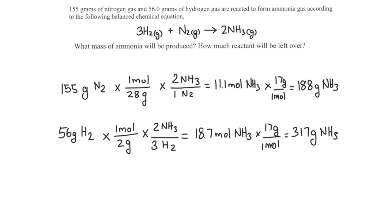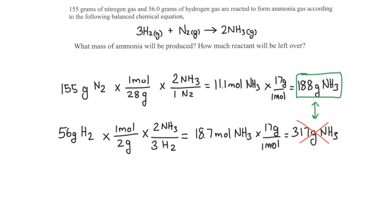Now we compare these two answers. Since 155 grams of nitrogen gave the smaller amount of product, that means nitrogen is the limiting reactant — nitrogen runs out first in this chemical reaction. So we can answer the first part of the question by stating that 188 grams of ammonia could be produced when 155 grams of nitrogen reacts with 56 grams of hydrogen gas.